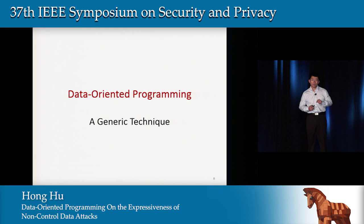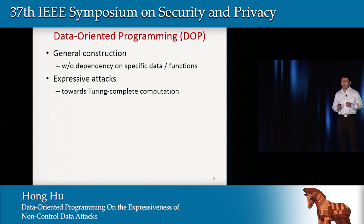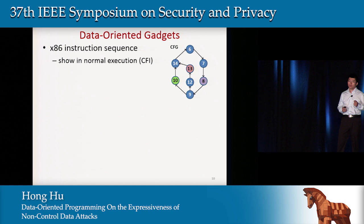Data-oriented programming is a general way to build non-control data attacks. These attacks are independent of any specific data or functions, and can be very expressive — even Turing-complete. DOP relies on two concepts: data-oriented gadgets and gadget dispatchers. Data-oriented gadgets are x86 instructions, quite similar to ROP gadgets, but they must appear in the normal execution of the program — that is, within the CFG.